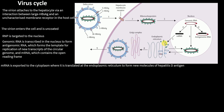The messenger RNA is then exported out of the nucleus to the cytoplasm, where it is translated at the endoplasmic reticulum to form new molecules of Hepatitis D antigen — both small and large isoforms.